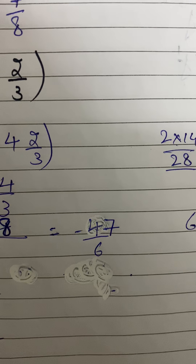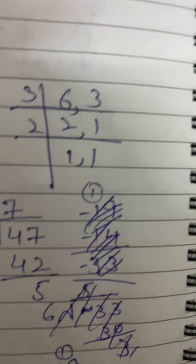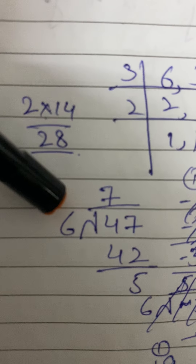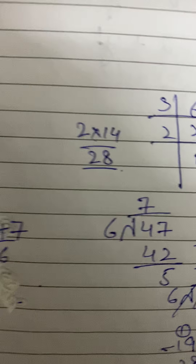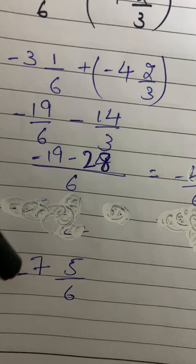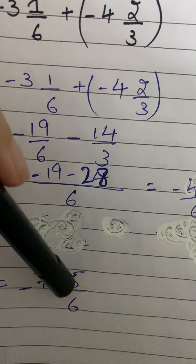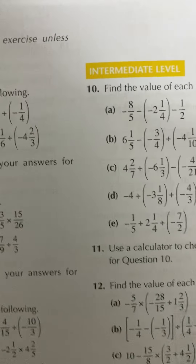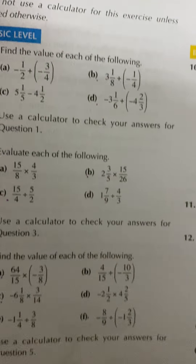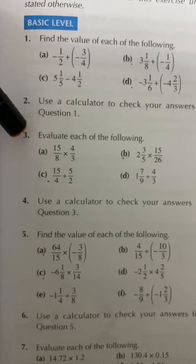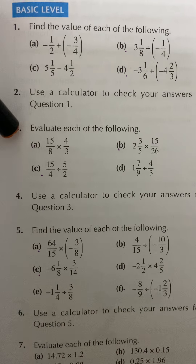We have minus 47 over 6 — an improper fraction — so we change it to a mixed number by dividing. 6 sevens are 42; 47 minus 42 is 5. The answer is minus 7 whole 5 over 6. You will solve parts a and c on your own.